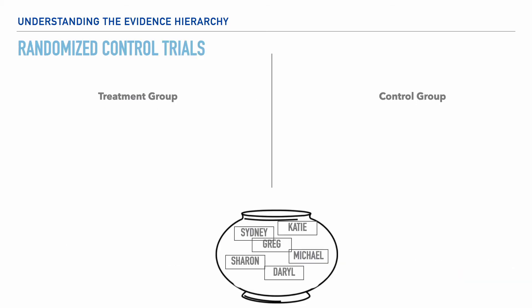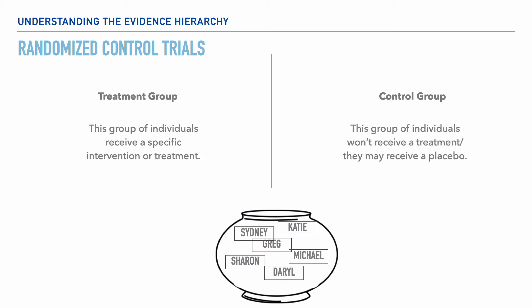The next level of evidence is randomized controlled trials. For this level, a group of people are gathered and, as the title suggests, these individuals are randomly assigned into either the treatment group or the control group. The treatment group receives a specific intervention — perhaps some new drug or treatment — and the control group will usually receive a placebo. So in this example, we would randomly select names out of a fish bowl to assign participants into groups. The benefit of this is so that we can say our groups have been formed by chance, and that we haven't mistakenly or purposefully made one group better than the other.